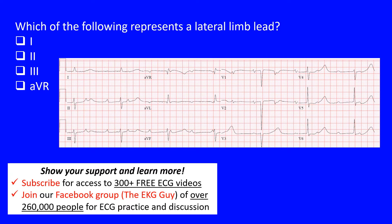Here we have a question that states which of the following represents a lateral limb lead. The choices are lead one, lead two, lead three, and lead AVR.